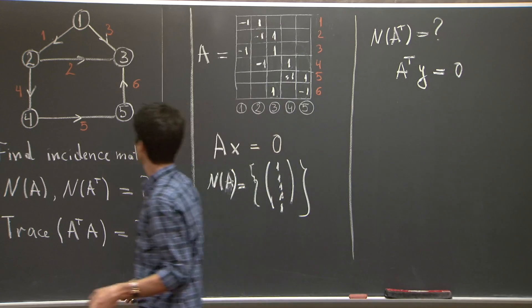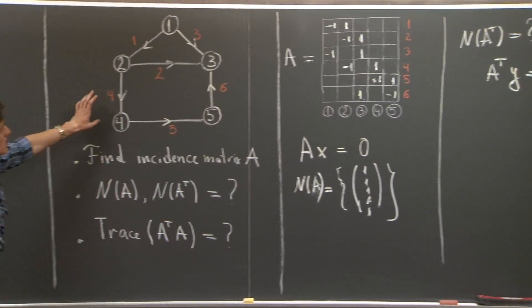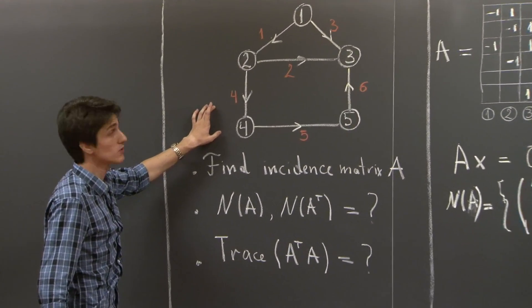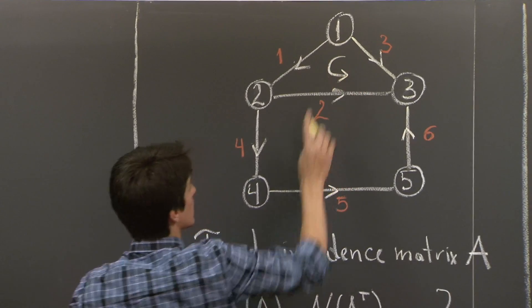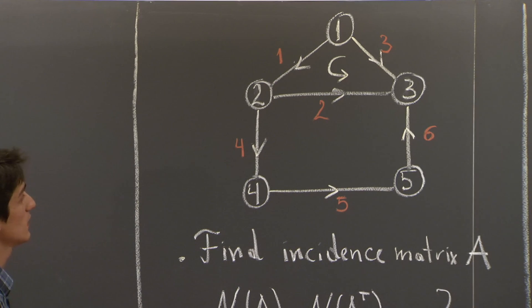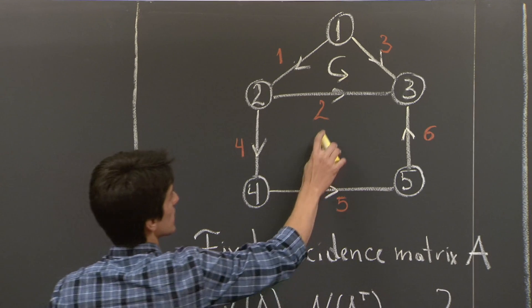We do it by flowing around loops of the graph. So, you see, this graph has three loops. The first one is this triangle up there.